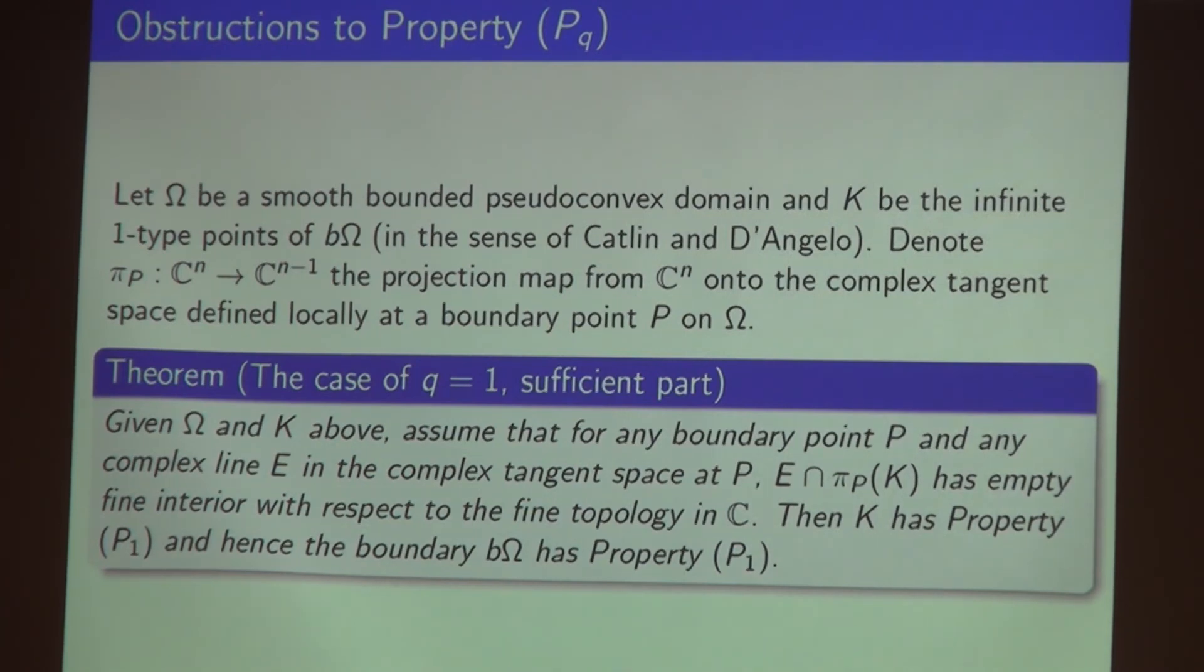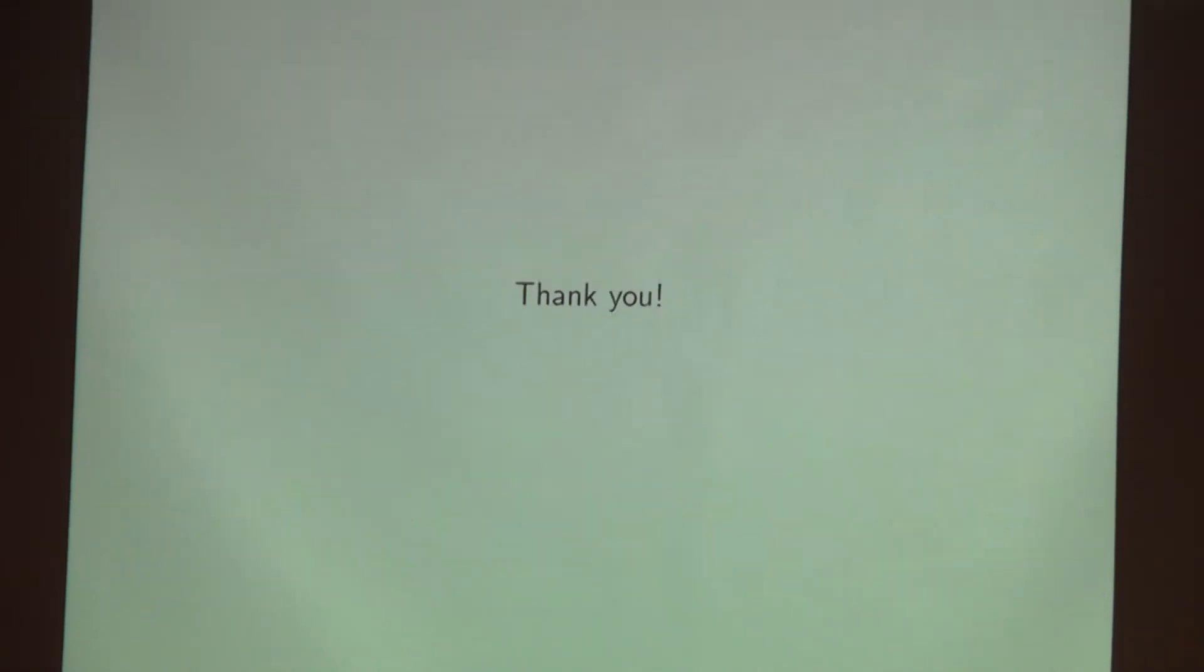If this intersection set has empty fine interior with respect to the fine topology in C, then the infinite point K has property P_1 and hence the boundary will have property P_1 since the boundary is the countable union of those sets, the convex set. That's all. Thank you.